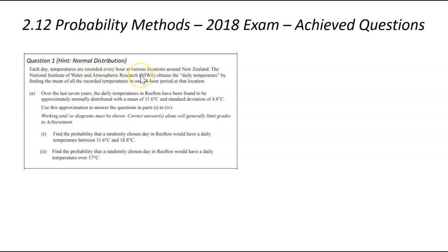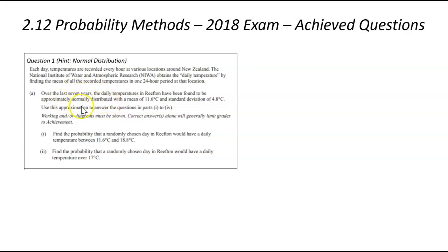Each day temperatures are recorded every hour at various locations around the country. The National Institute of Water and Atmospheric Research, or NIWA, obtains daily temperatures by finding the mean of all the recorded temperatures in one 24-hour period at a location. Over the past seven years, the daily temperatures of Reefden are found to be normally distributed with a mean of 11.6 degrees and a standard deviation of 4.8 degrees.